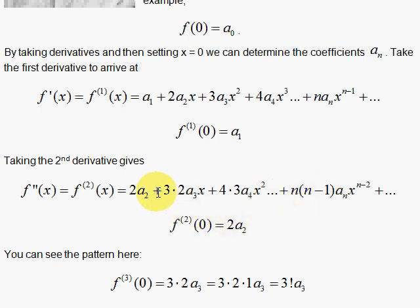Picking x to be 0 kills off all the terms except the first one. And therefore, we set 2a₂ to the second derivative evaluated at 0.